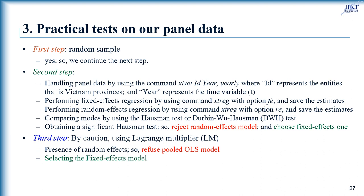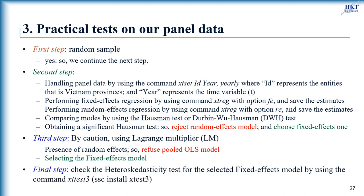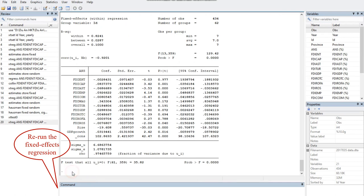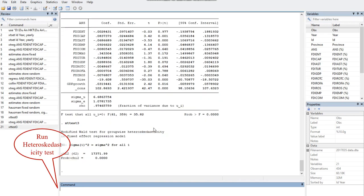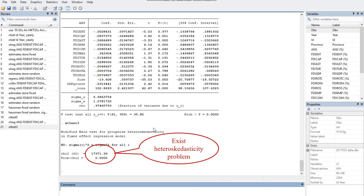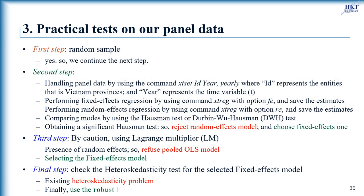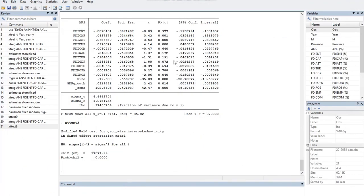We must check the heteroscedasticity test for the selected fixed effects model using the command xttest3. This is a user-written program; to install it, type: ssc install xttest3. Because Stata stored recently the results of the random effects model, we re-run the fixed effects regression, then run the heteroscedasticity test. The null is homoscedasticity, and our significant test rejects the null, indicating that our fixed effects model has a heteroscedasticity problem. Hence, we use the robust option to correct for this, by typing xtreg with the robust option.